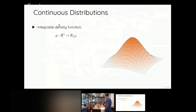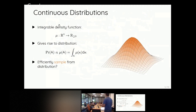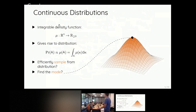In the continuous world, a distribution is a non-negative function on R^n which is integrable - the integral is finite - giving rise to a probability distribution when normalized. A typical computational question is whether you can efficiently sample from such a distribution. A perhaps non-obvious question is whether you can find the mode, which is more of an optimization question - you just want to find the maximum of a function.